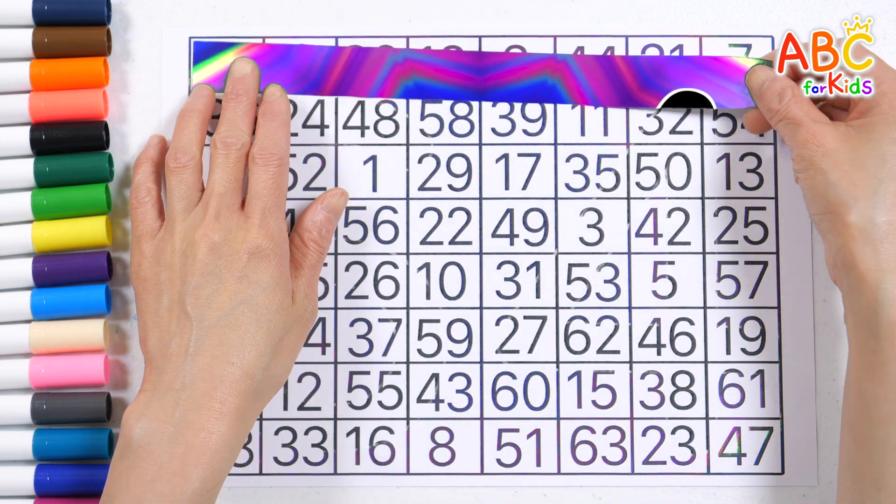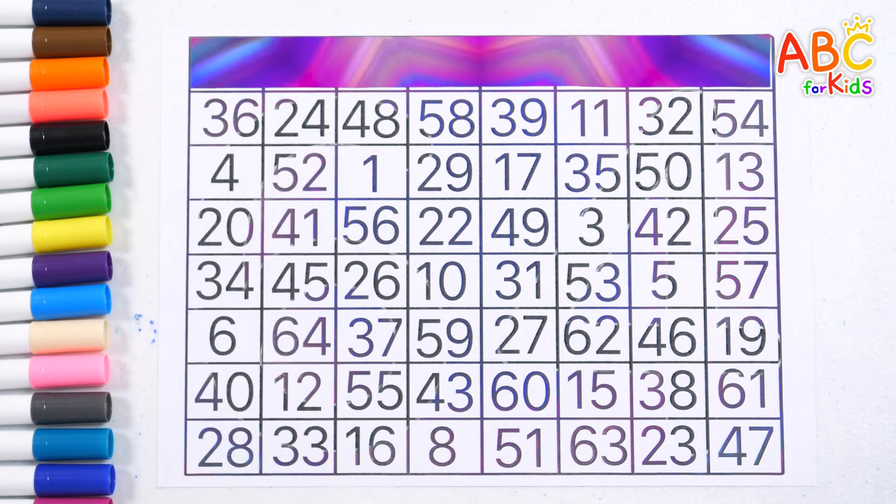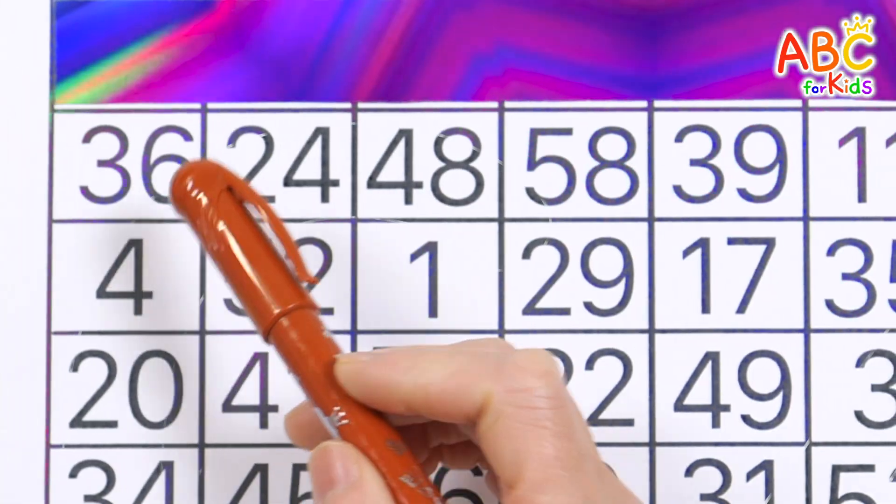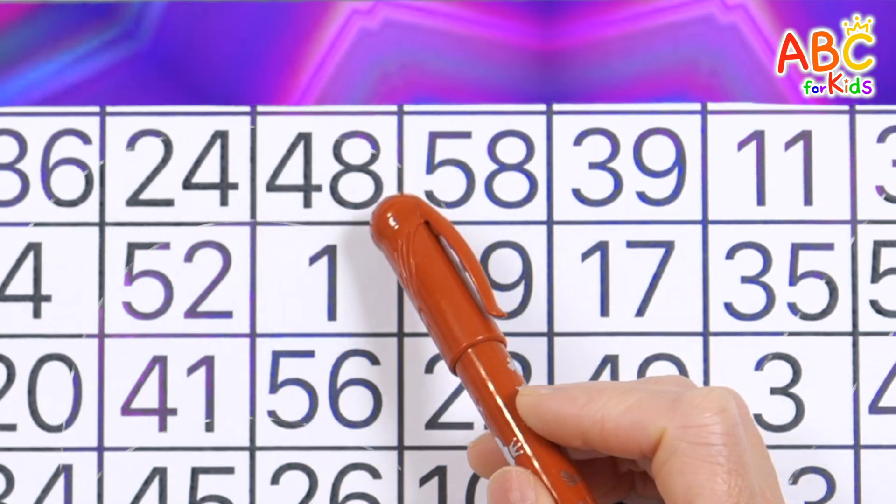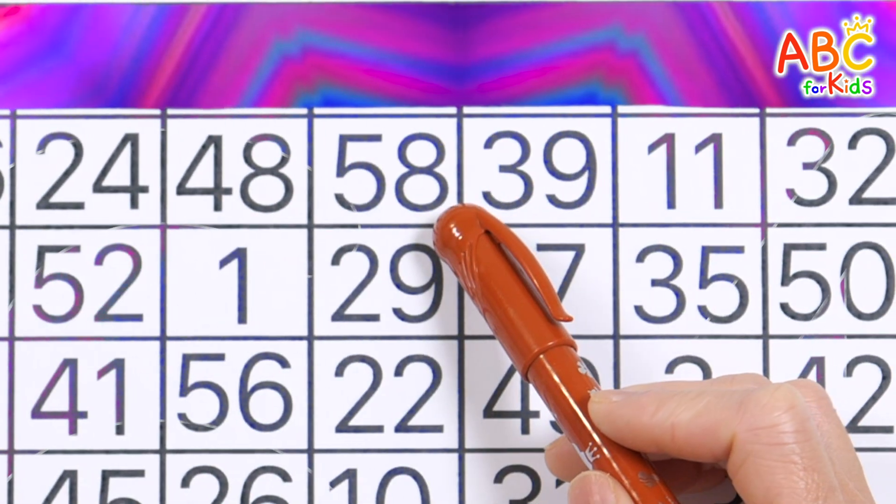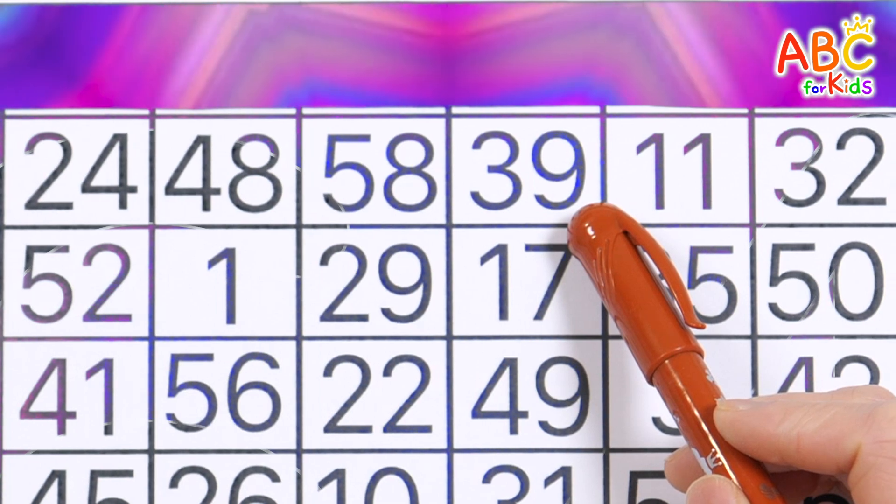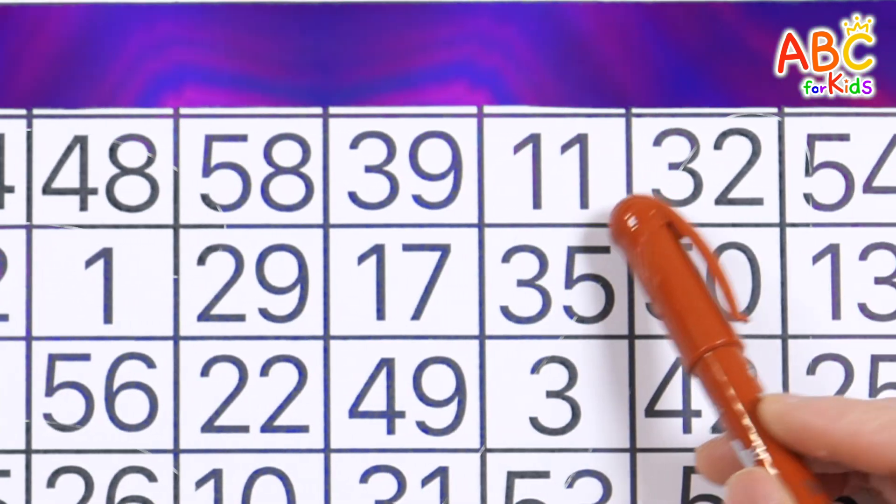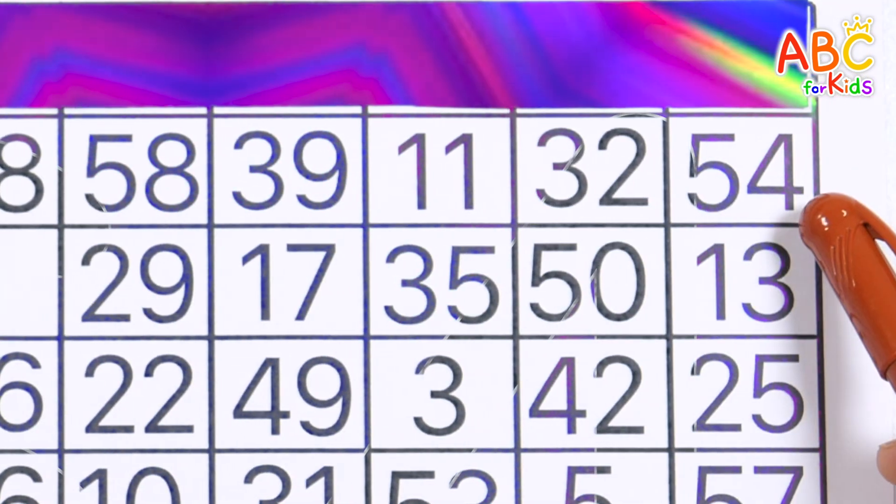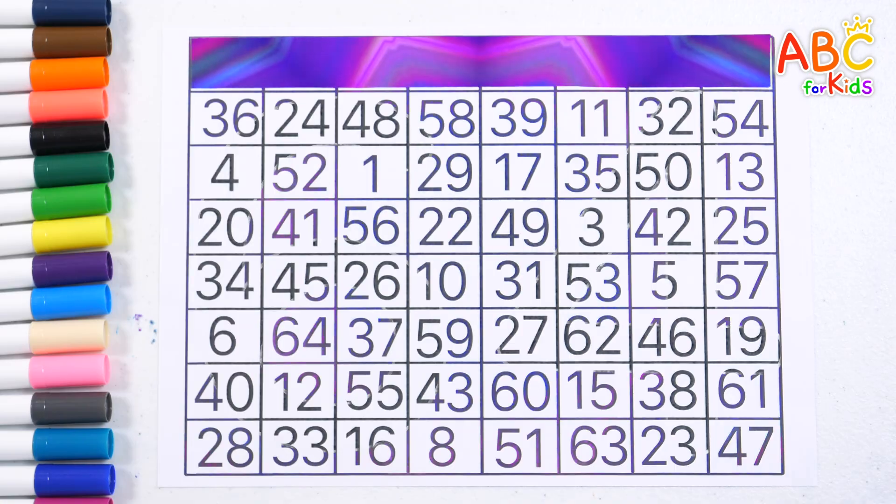Guess what the hidden number is. Let's read the numbers again. 36, 24, 48, 58, 39, 11, 32, 54. Very good!